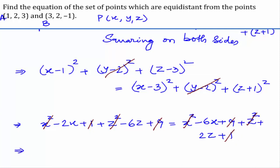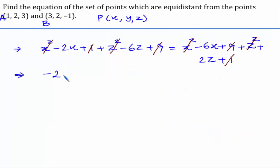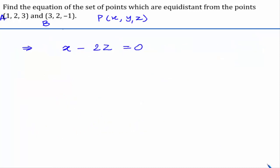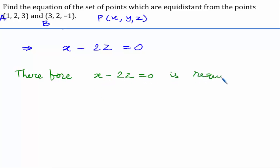After cancelling x squared, z squared, 9, and 1 from both sides, the remaining terms give us minus 2x minus 6z equals minus 6x plus 2z, which simplifies to 4x minus 8z equals 0. Dividing both sides by 4, we get x minus 2z equals 0. Therefore x minus 2z equals 0 is the required equation.